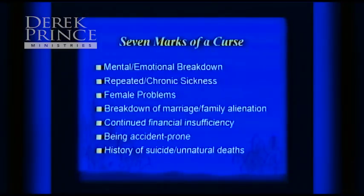And seventh is a history of suicide or unnatural deaths — where you see in a family more than a usual number of deaths, particularly early deaths, unexplained deaths, dying at 44 of so-called natural causes, and you see that repeatedly. You begin to wonder again if something supernatural may be happening.